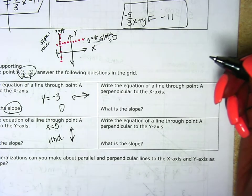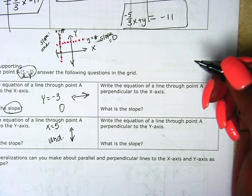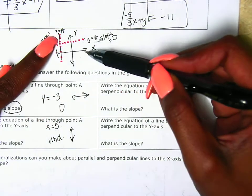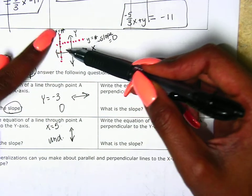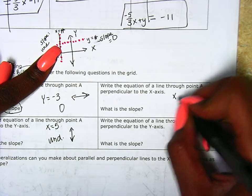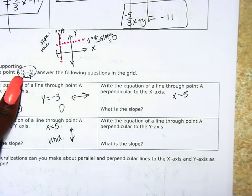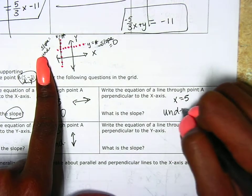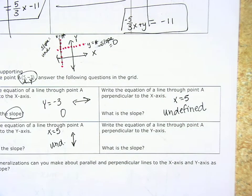Write the equation of a line through point A that is perpendicular to the x axis. Perpendicular to the x axis means it is actually going through the x axis, so it's this line here, which would be x equals 5, because it's going through the point. And our slope for that line is undefined.